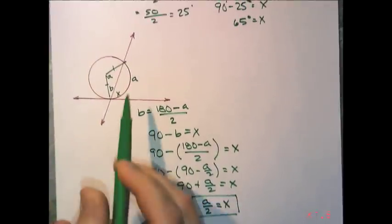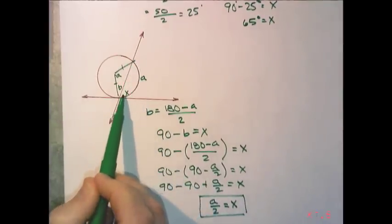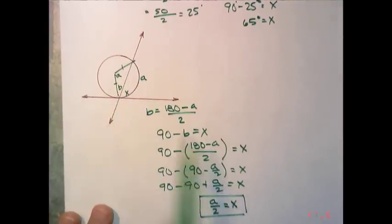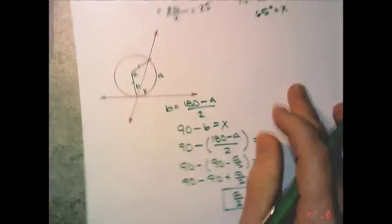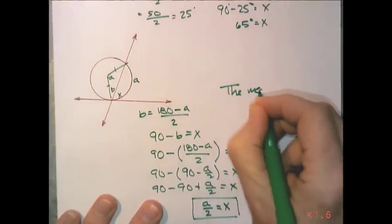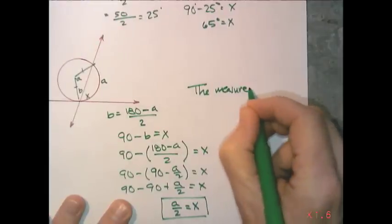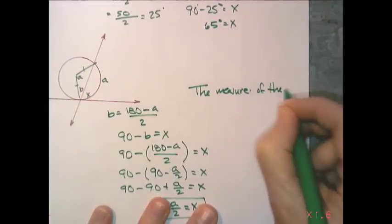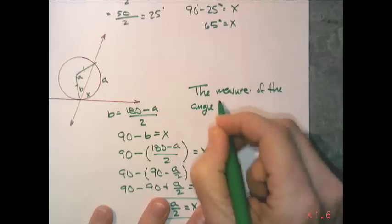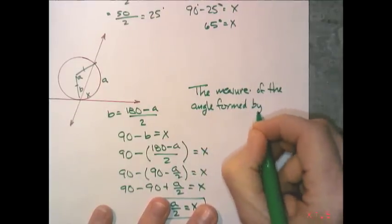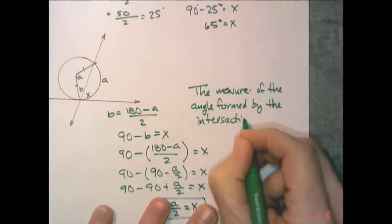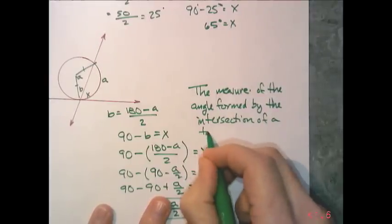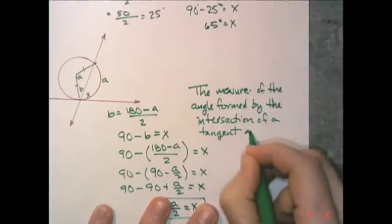If you look at your original diagram, that means the arc measure right there and that angle formed by the two lines means it's going to always be half, just like an inscribed angle. We're going to write that down as one of our conjectures here.